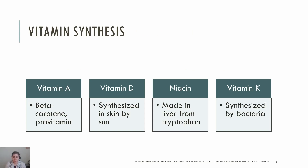There are vitamins in the body that are made from precursors, and these include vitamin A, vitamin D, and niacin. Vitamin A, for example, is found in beta-carotene, a pro-vitamin in red and orange fruits and vegetables. The body can convert beta-carotene to vitamin A in the small intestine. Vitamin D can be synthesized in the skin from the sun. Niacin can be made in the liver from the amino acid tryptophan when tryptophan is available in quantities greater than needed for protein synthesis. Lastly, vitamin K can be synthesized by bacteria in the gut.